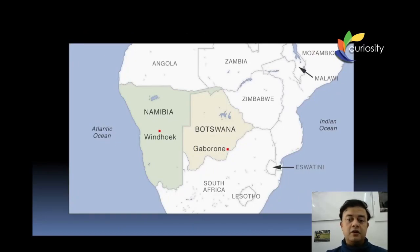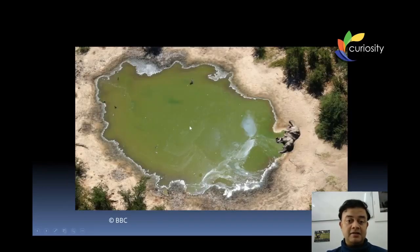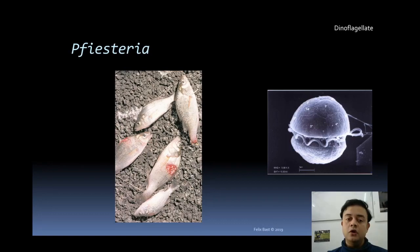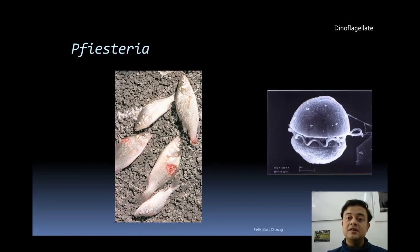Algae is also responsible for other large-scale phenomena. BBC reported a large number of elephant deaths in Botswana, a Central African country. Investigations revealed that the elephants were drinking water from ponds and lakes infested with algal blooms — specifically hazardous cyanobacterial blooms — responsible for these elephant deaths. Algal blooms also have ecological roles. Pfiesteria, a dinoflagellate, is responsible for large numbers of fish deaths and can cause infectious fish disease.